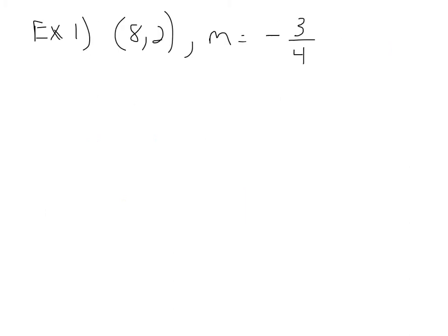First example. Listen carefully to how I say this, because most of the time it will be written out in words. The problem might say something like: what is the equation of a line that crosses point (8, 2) and has a slope of negative three-fourths?